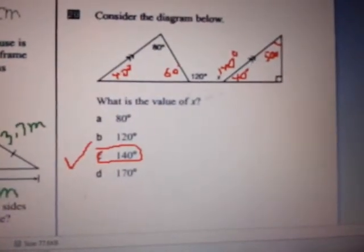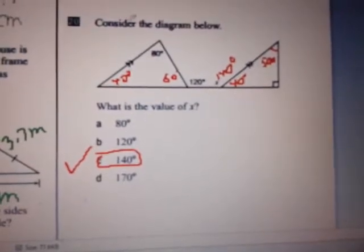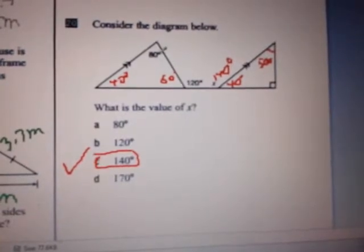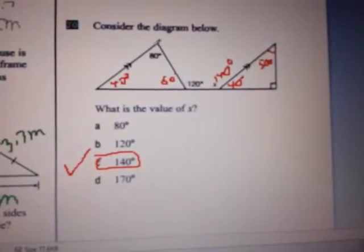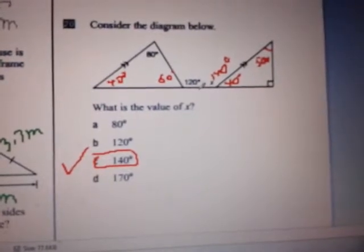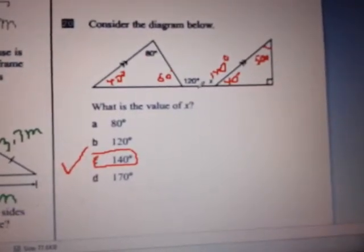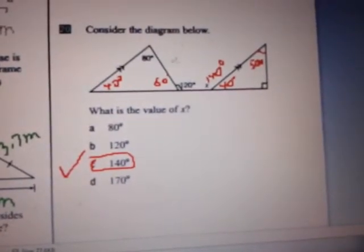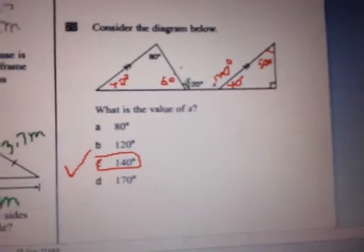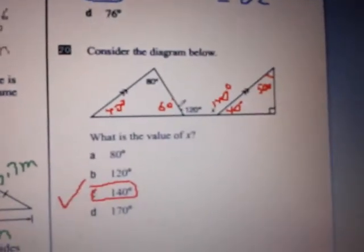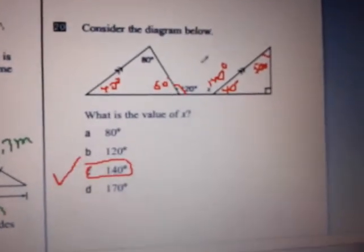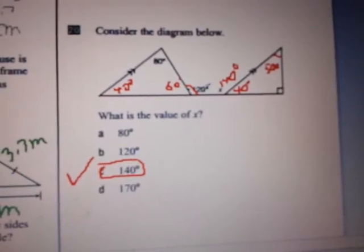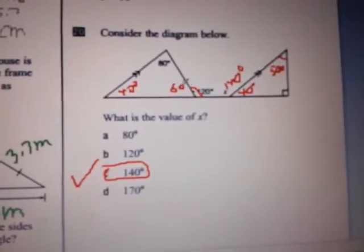Final question for this video, question 20. Consider the diagram below. We have an 80-degree angle here and a 120-degree angle here. How we solve this is that since this angle here is 120 degrees, and this angle here and this angle here should add up to 180 degrees, we know that this angle is 60 degrees here.